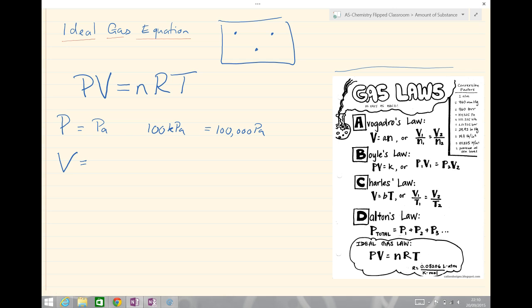Our volume is always given in meters cubed and often we're given values of volume in centimeters cubed. So if we want to convert from, say, 100 centimeters cubed to meters cubed we would divide by 1 times 10 to the sixth or a million. So we would end up with a value of 100 times 10 to the minus 6 meters cubed, which is the same as 1 times 10 to the minus 4 meters cubed.